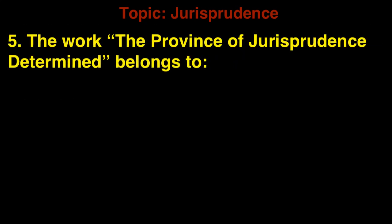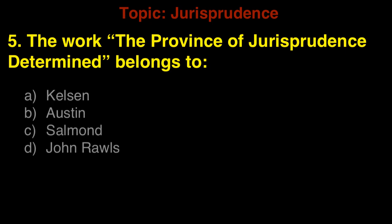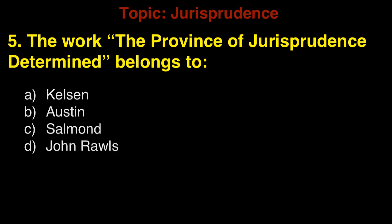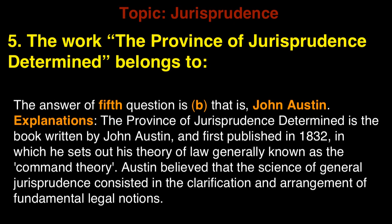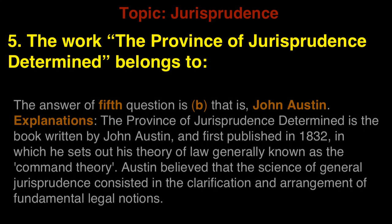Question 5: The work 'The Province of Jurisprudence Determined' belongs to A. Kelsen, B. Austin, C. Salmond, D. John Rawls. The answer is B, that is John Austin. Explanation: The Province of Jurisprudence Determined is the book written by John Austin, first published in 1832, in which he sets out his theory of law generally known as the command theory. Austin believed that the science of general jurisprudence consisted in the clarification and arrangement of fundamental legal notions.